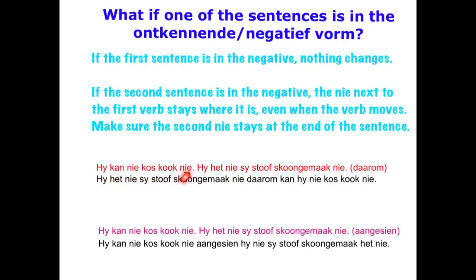How does this work? We have: Hy kan nie kos kook nie. Hy het nie sy stoof skoon gemaak nie. Darom. So darom means 'therefore'. It's a Groep 2 word, so we put the action word as close to the conjunction as possible. The first sentence stays the same. We put darom down — no punctuation. Then the verb moves next to the conjunction, which leaves nie directly next to the subject. We keep nie at the end of the sentence: Hy het nie sy stoof skoon gemaak nie, darom kan hy nie kos kook nie.